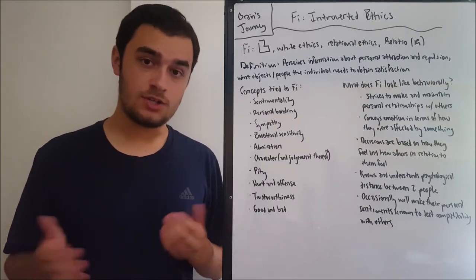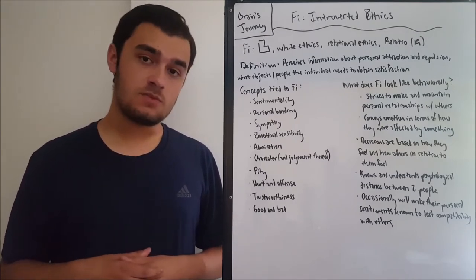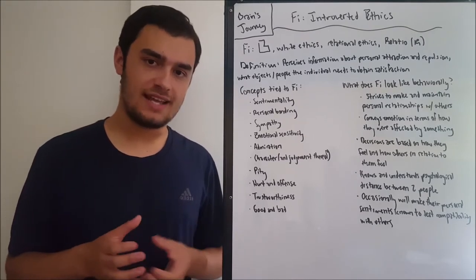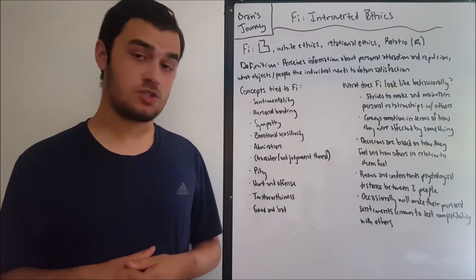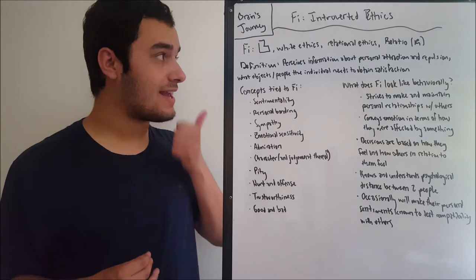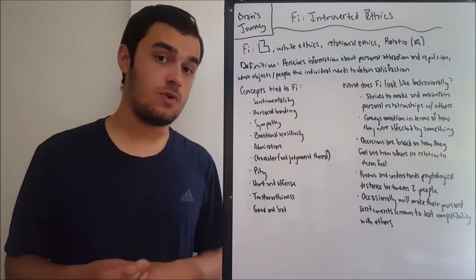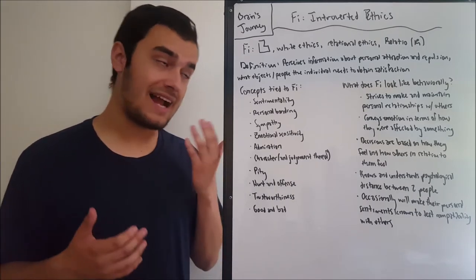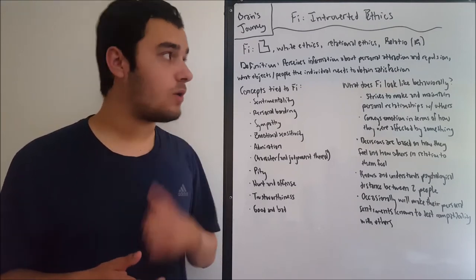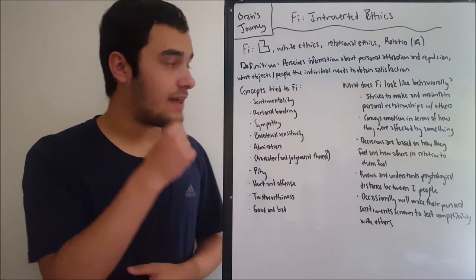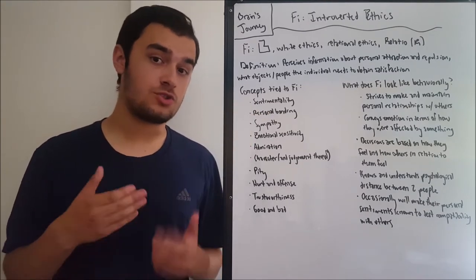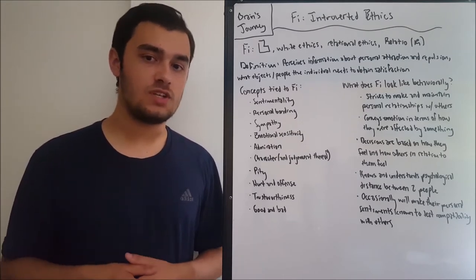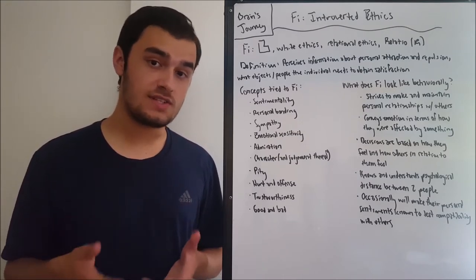So the alternative names for FI — you'll see this L shape, this rectangular shape, and correspondingly white ethics. This is in contrast to FE, which had the black version and black ethics. This one is called relational ethics, because it emphasizes personal attraction, the relations that we form, instead of just emotions like FE.